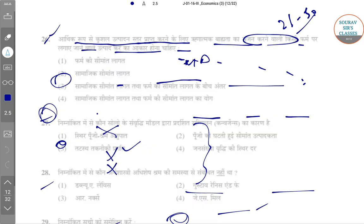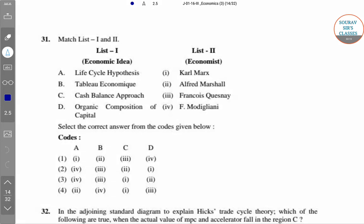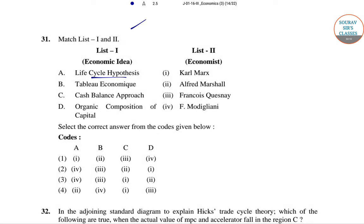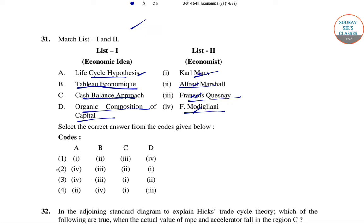Question 31: Matching concepts to economists — the Life Cycle Hypothesis was given by Modigliani, Tableau Économique was given by Quesnay, the Cash Balance Approach was given by Marshall, and the Organic Composition of Capital was given by Karl Marx. The correct matching order is 4, 3, 2, 1 — so option 2 is the right answer.